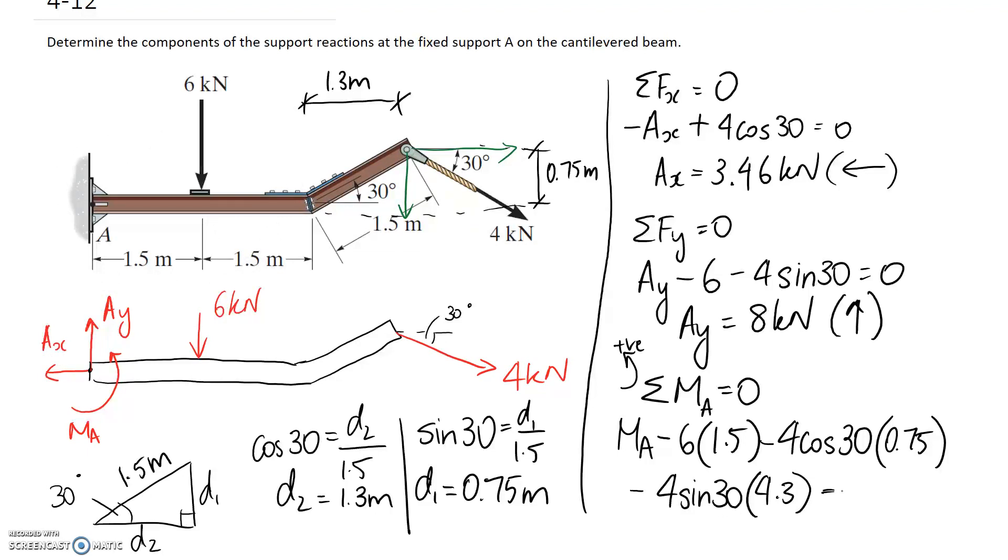And that's all we've got for the equation so we know this has to be equal to 0 so if we rearrange for MA all of these are negative so when they flip to the other side it becomes positive so it's 20.2 the units are kilonewton metres.